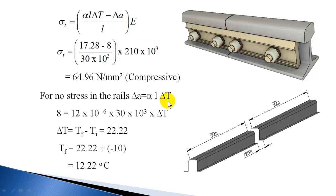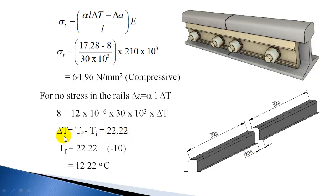Setting δA = α·L·ΔT: δA is 8 mm, α is 12 × 10⁻⁶, L is 30 × 10³ mm, and solving for ΔT gives 22.22 degrees centigrade. Since ΔT = final temperature − initial temperature, the final temperature = 22.22 + (−10) = 12.22 degrees centigrade. So the temperature can rise up to 12.22 degrees centigrade before stress is induced.